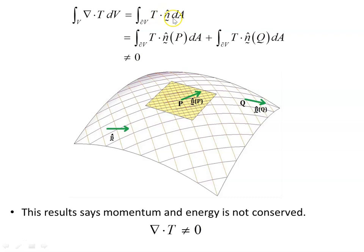So ∇·T dV = T·n-hat dA. We're going to have T·n-hat at point P times dA, and at some other point Q, the normal vector will generally point in a different direction to P at different points on the manifold. That's going to affect whether or not we can evaluate this integral, because we won't be able to.